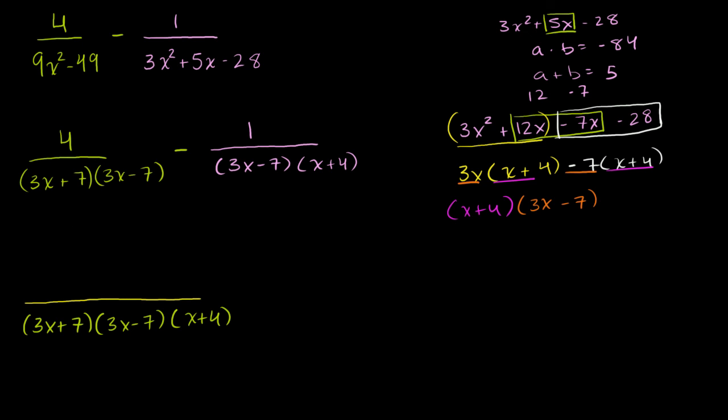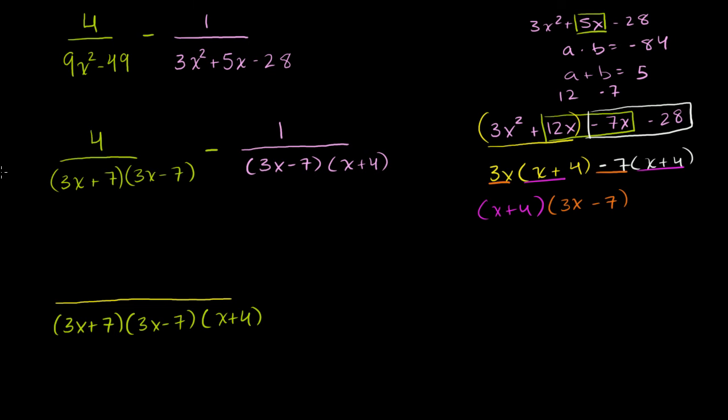Now, what do we have to multiply this guy by to have this as the denominator? Well, I just have to multiply the numerator and the denominator by x plus 4. So if I multiply this guy by x plus 4 over x plus 4, my denominator will work out. And so my numerator will become 4 times x plus 4, which is 4x plus 16. That's this first term over here.